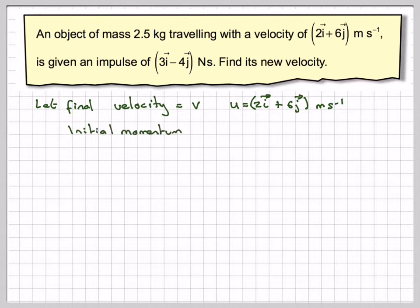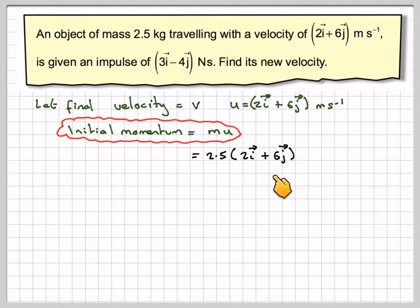The initial momentum will be mu, so that will be 2.5 times the initial velocity, which is 2i plus 6j. Multiplying each component out, you're going to get 5i and 15j. So it's 2.5 times 2 and 2.5 times 6.